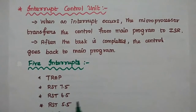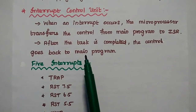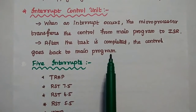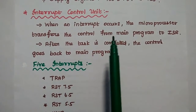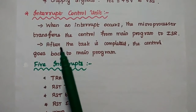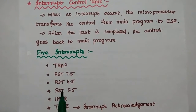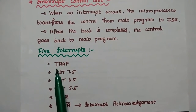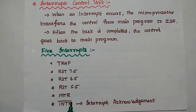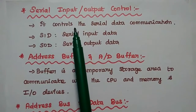The interrupt control unit manages interrupts, which are events that temporarily stop the processor to perform a specific task called an interrupt service routine. When an interrupt occurs, the processor transfers control from the main program to the interrupt service routine, and after completing the task, control returns to the main program. The 8085 has 5 interrupts: Trap, RST 7.5, RST 6.5, RST 5.5, and INTR, with one acknowledgement signal INTA bar.